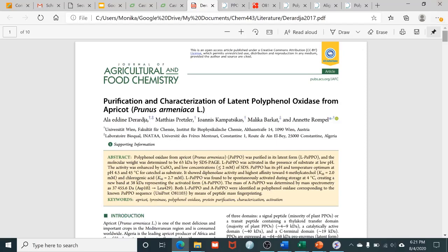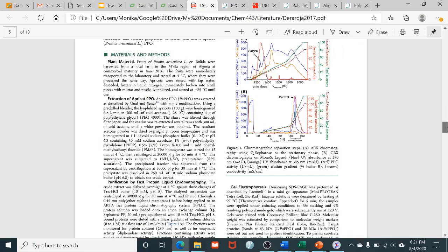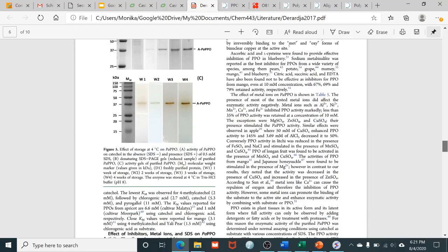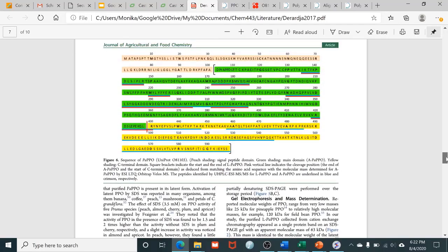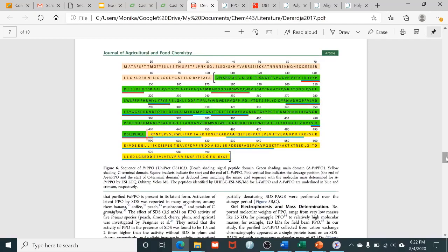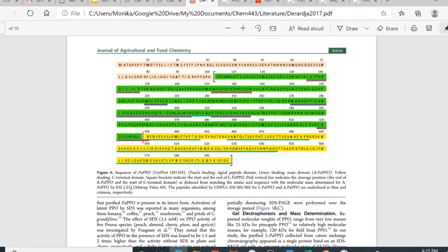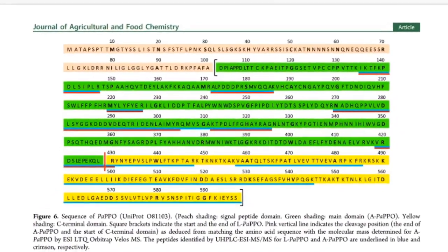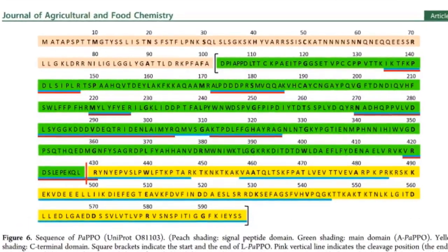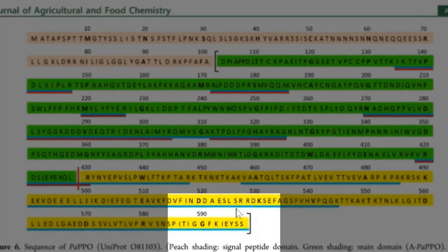In this journal article, you see the amino acid sequence of polyphenol oxidase from apricot in figure number six. All proteins are made up of amino acids, and this polyphenol oxidase enzyme has almost 600 amino acids.